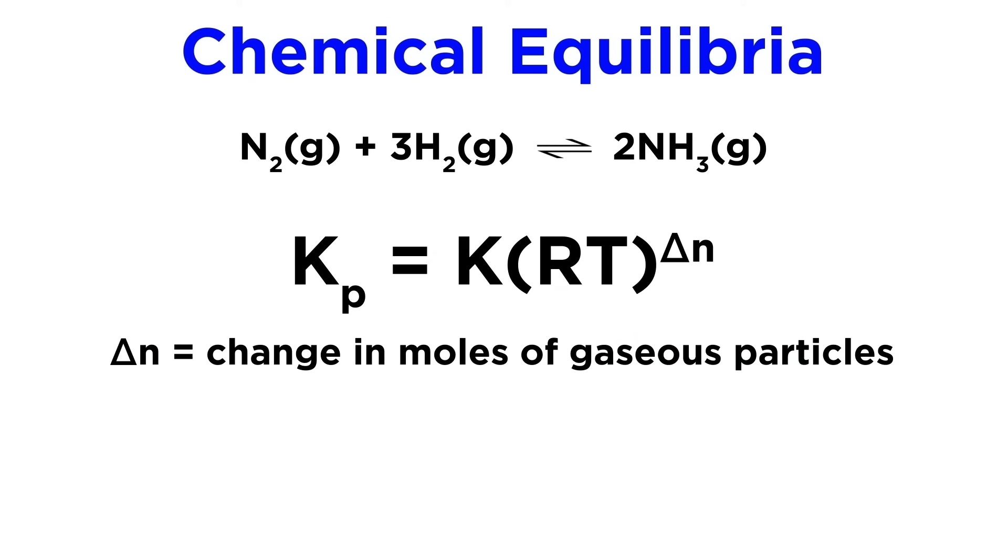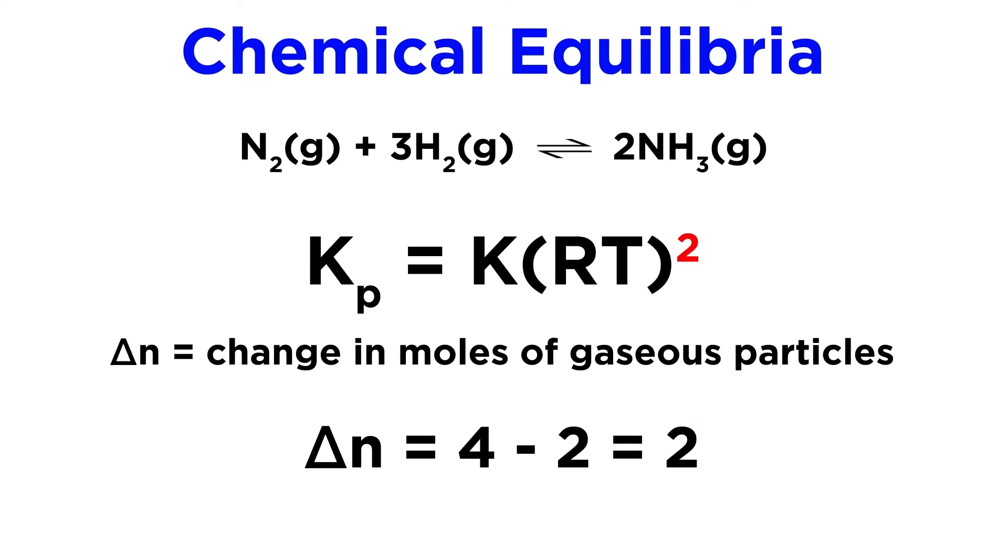So for the ammonia synthesis, we start with 4 moles and end up with 2 moles, which means that delta N is negative 2. So for this one, Kp equals K times RT squared.